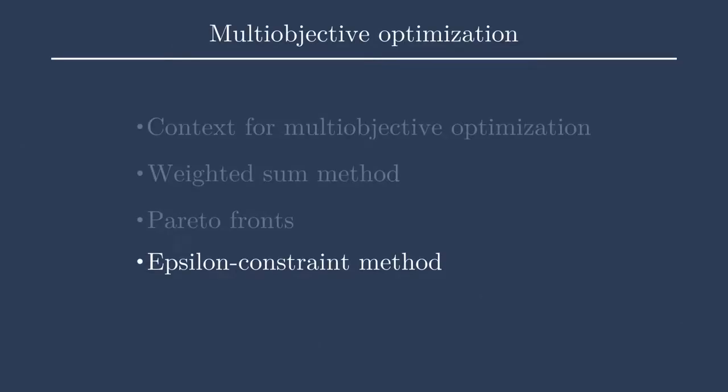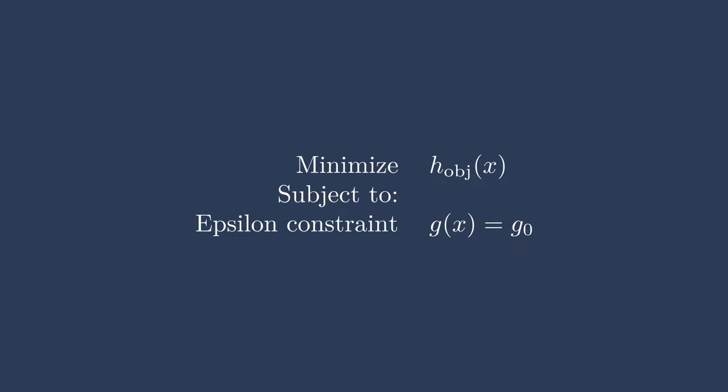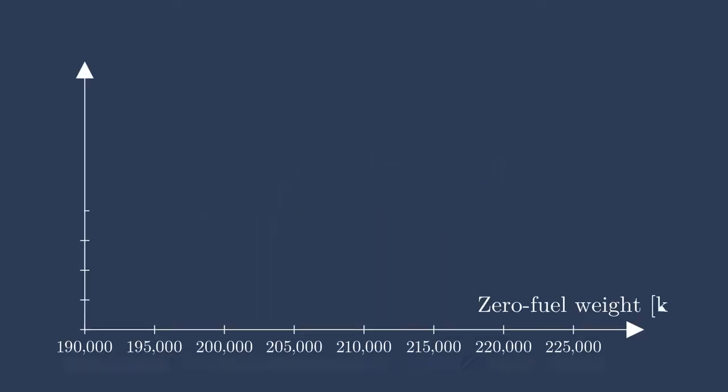Another way to construct a Pareto front is through the epsilon constraint method. The goal here is to minimize just one objective value, not a summation of them, while constraining another objective value. You can think of this by constructing the same axis that we had before, then drawing vertical lines.